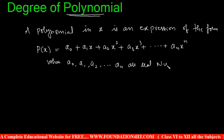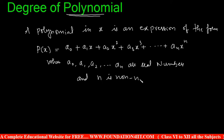These coefficients must be real numbers, and n is non-negative — n should always be positive. This is an important rule: the power should be non-negative, and then only we can call it a polynomial. Let us see examples to understand this.